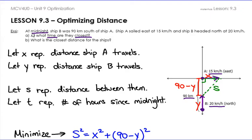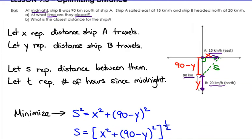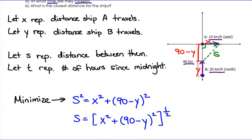Part A is asking for the time, so we need a let statement for T, which represents the time after midnight starts — T is any time after midnight. Part B asks what is the closest distance for the ships. So first we find the time they're closest, then we find that actual distance. We want to minimize the distance itself.